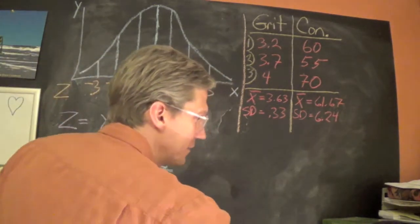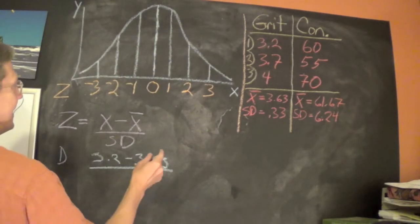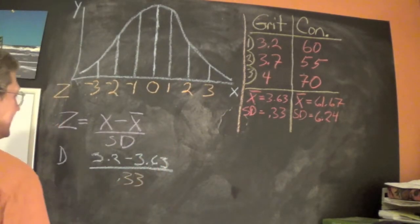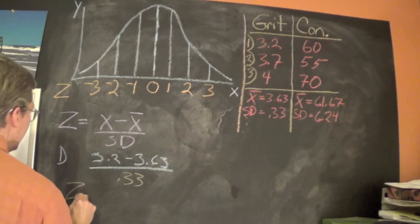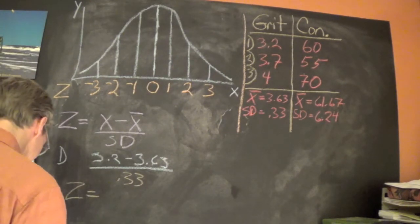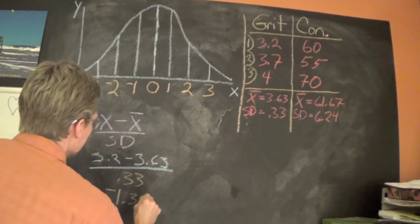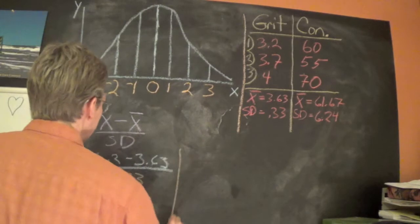And divided by the standard deviation. Here I've already calculated this, and the z-score that we would get is a negative 1.30. Okay, and that was for the grit.